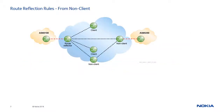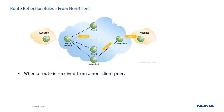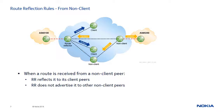When an RR receives a route for a specified prefix, it first selects the best path from all paths received. If the best route is received from a non-client peer, the RR reflects the route to all its defined client peers. The route is not propagated to other non-clients because they are part of the full iBGP mesh and would have already received it from the original non-client peer. The RR would then also propagate the route to all eBGP peers.